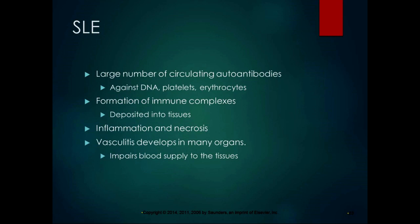Vasculitis, which is inflammation of the blood vessels, develops in many organs, which impairs blood supply to tissues. This results in ischemia — inadequate oxygenation of cells — leading to further inflammation and destruction of tissue. The process usually takes place in several different organs, and common sites include the kidneys, lungs, heart, brain, skin, joints, and digestive system.